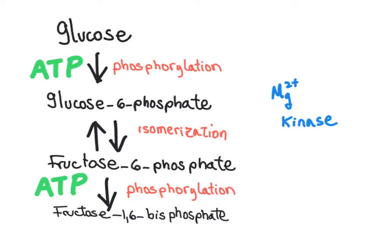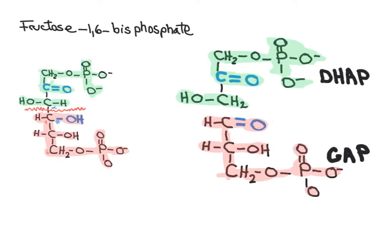We are going to use another kinase, and every time we see kinases and ATP molecules, we need to remember the counter-ion magnesium 2+. The reason for the isomerization from glucose-6-phosphate to fructose-6-phosphate has to do with the end product. The aldol cleavage of the 6-carbon bisphosphate produces two 3-carbon monophosphates — one that is an aldose phosphate and a second one that is a ketose phosphate.